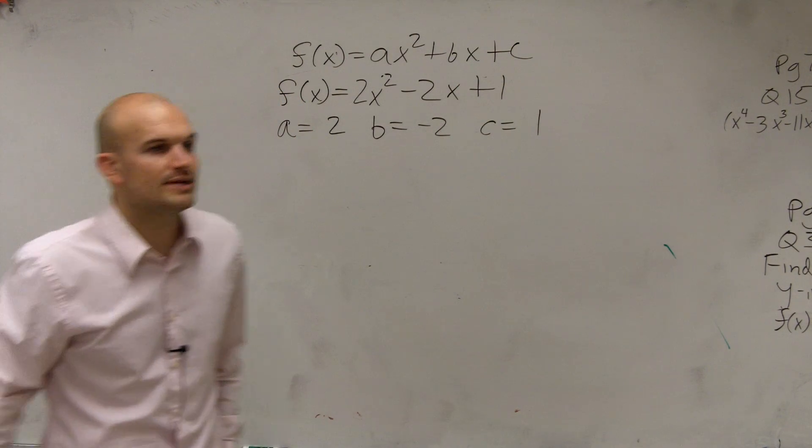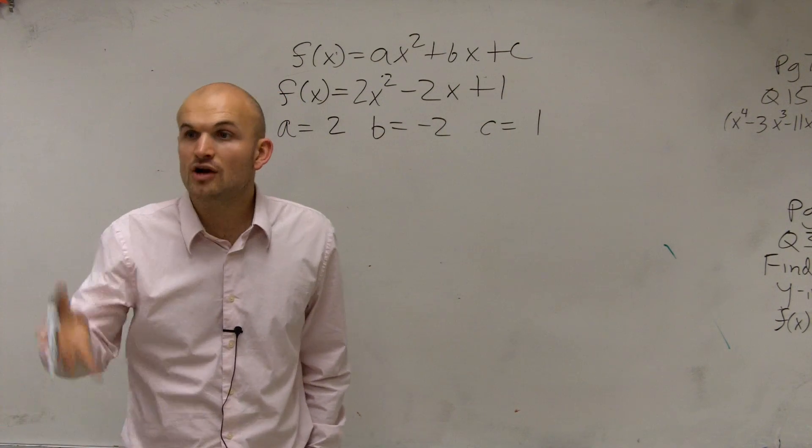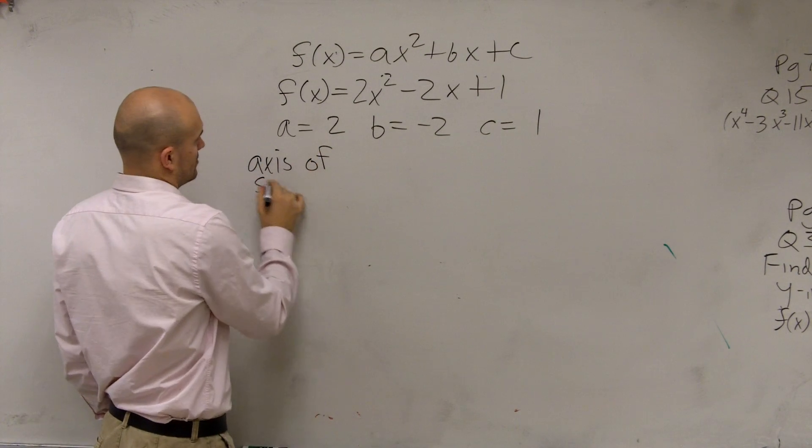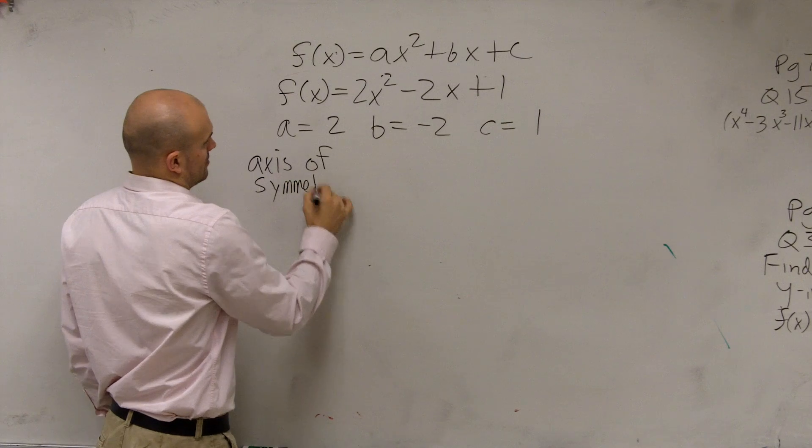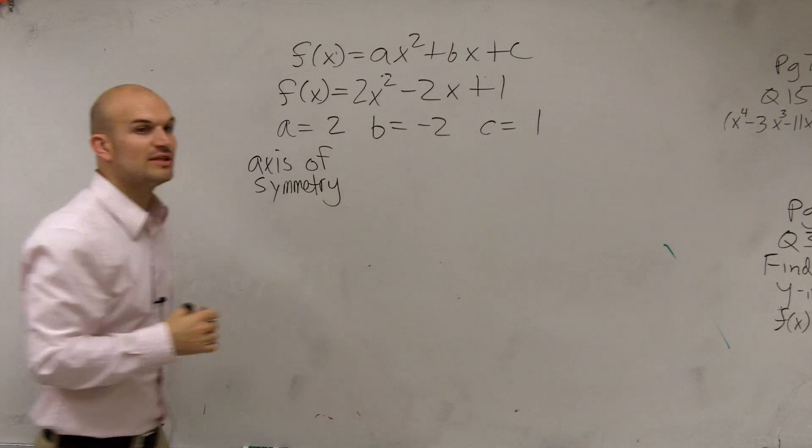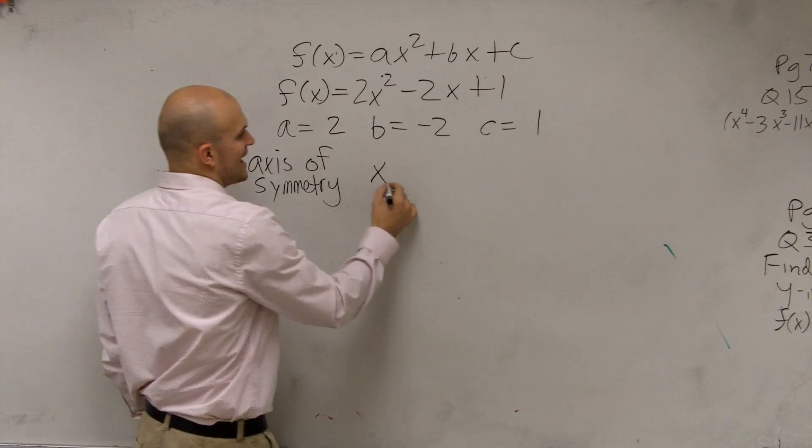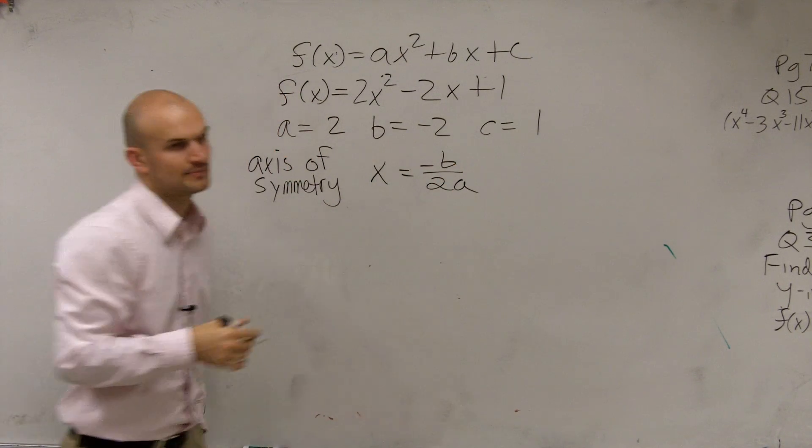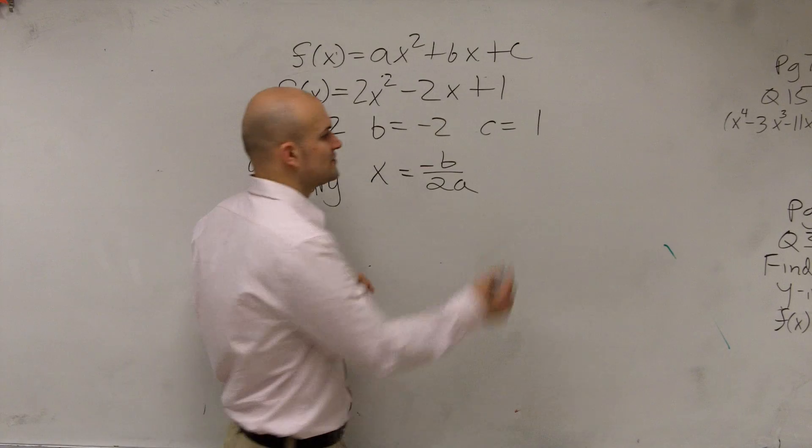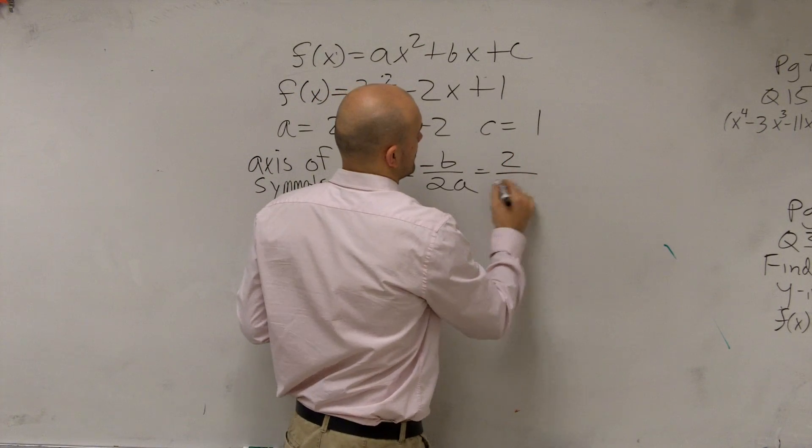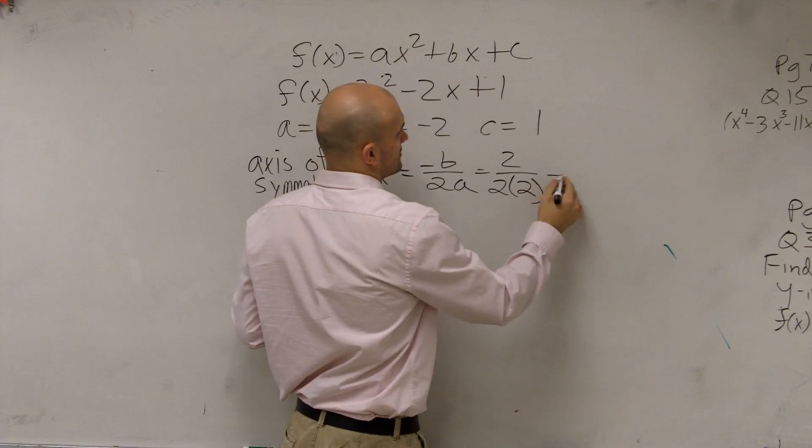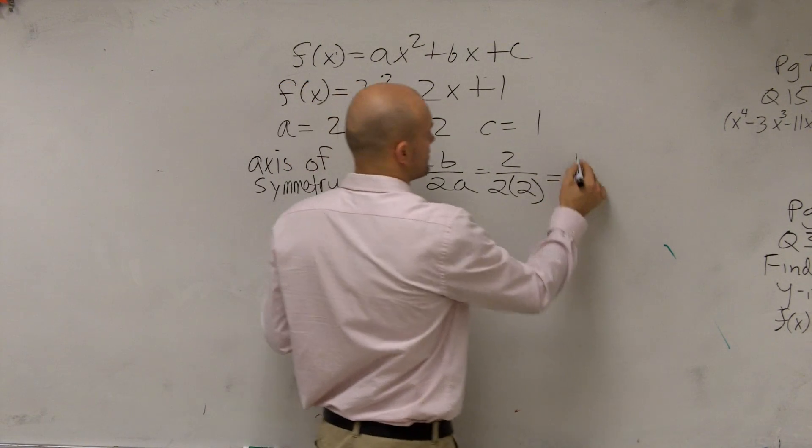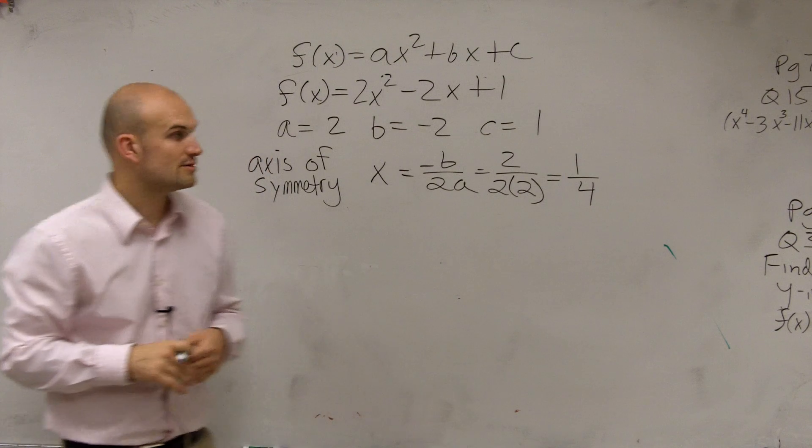So now that we know what our a, b, and c are, we can find the axis of symmetry. Remember, the axis of symmetry is a vertical line that says x equals opposite of b divided by 2a. So what we do is we take the opposite of b, which is positive 2 now, 2 times a, which is 2. So therefore, we have 1 fourth, which is our axis of symmetry.